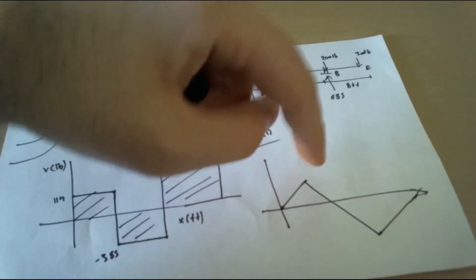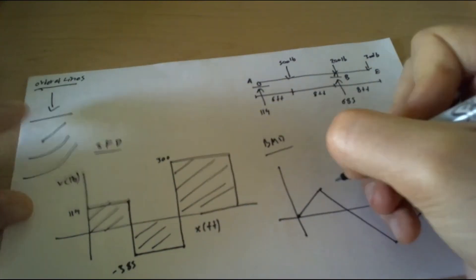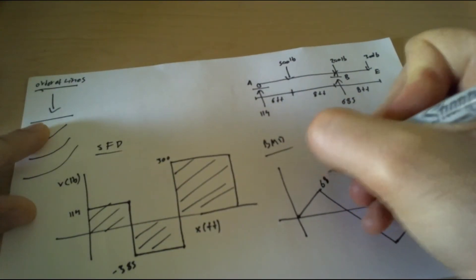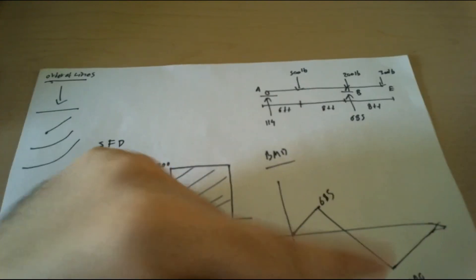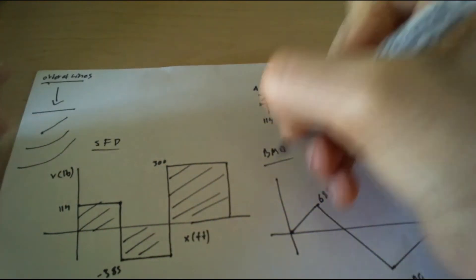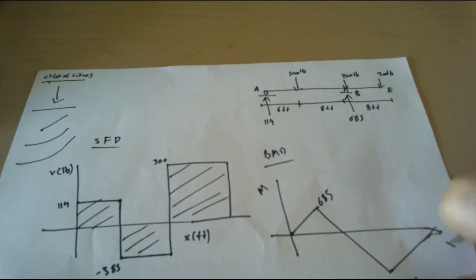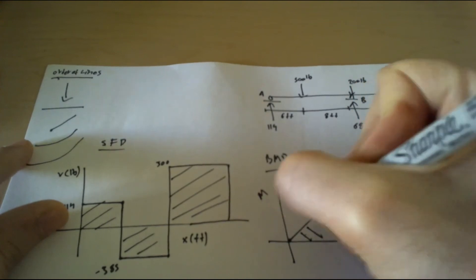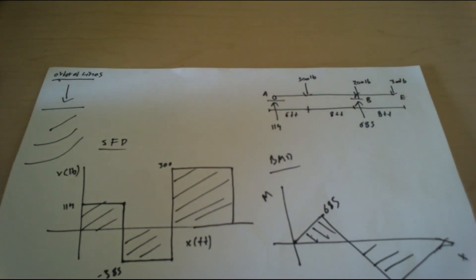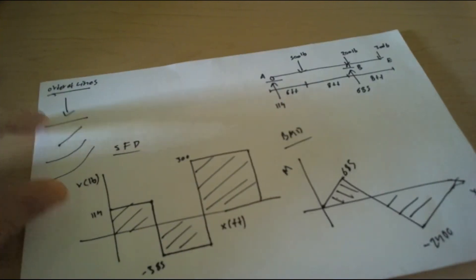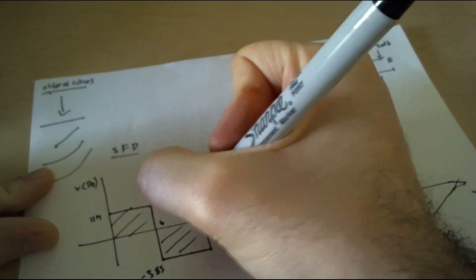And these right here is the area under these ones. So we can see the area under that is 685, and right here is negative 2400. And again this is moment versus x, and we draw these lines like that. You can put the distances too: 6, 14.